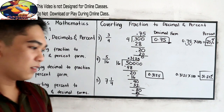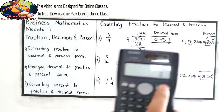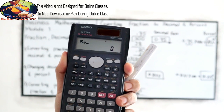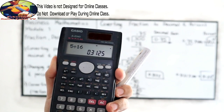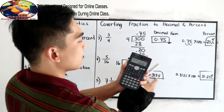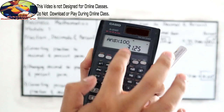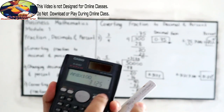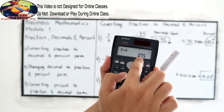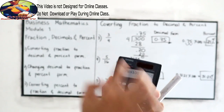You can check your answers using a calculator. So 5 divided by 16 gives 0.3125; multiply by 100 to get 31.25%. For number 3: 3 divided by 4 is 0.75 times 100 gives 75%.